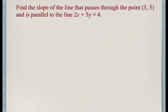Now in this question we're asked to find the slope of a line that passes through the point (3, 5) and is parallel to the line 2x plus 5y equals 4.